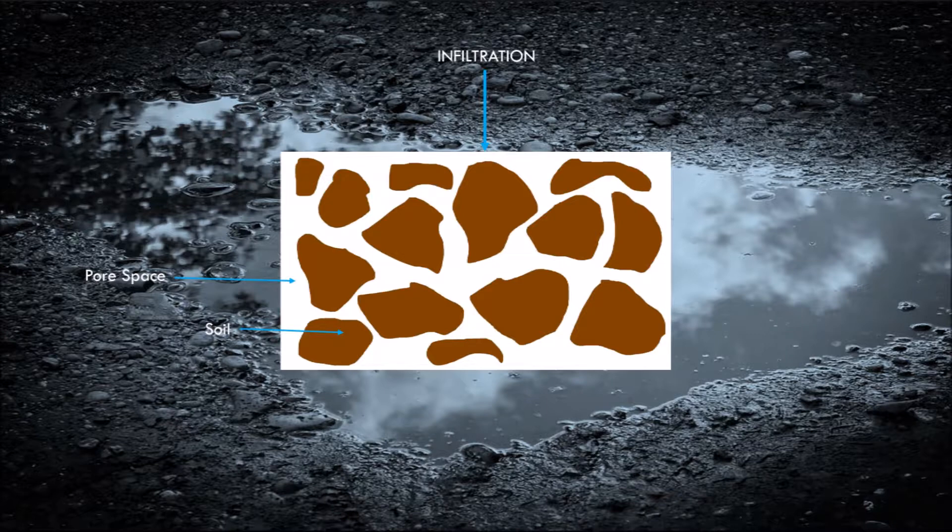Simply put, infiltration is the process of water entering the ground from the soil surface. Soils are not consolidated masses and contain areas unoccupied by solids that can be filled with air or water. These unoccupied spaces, called pores, allow water to move into a soil from the ground surface and continue down through the rest of the soil profile.